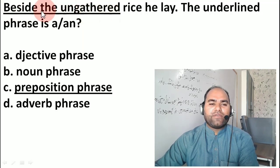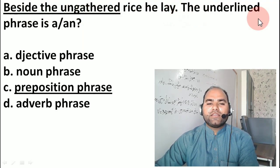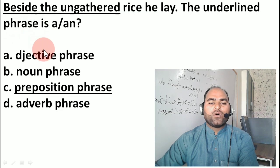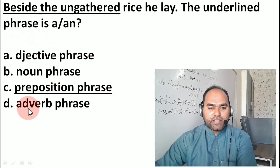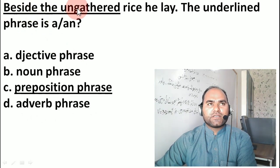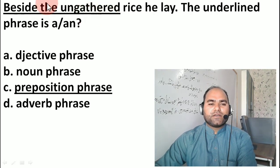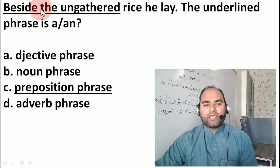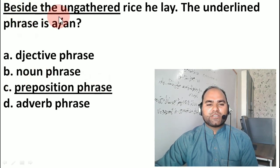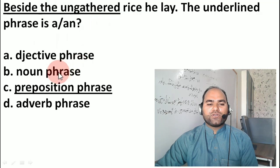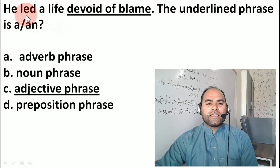Next: 'beside the withered rice' — three words are underlined. What type of phrase is this — adjective phrase, noun phrase, prepositional phrase, or adverb phrase? As I explained in Review Number 2: when a preposition comes at the start of a phrase (at, on, over, beside), we call it a prepositional phrase. 'Beside' is at the beginning, so this is a prepositional phrase.